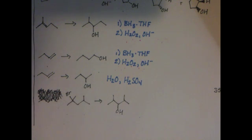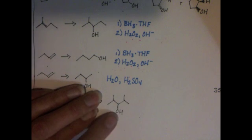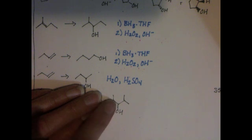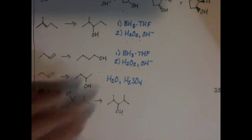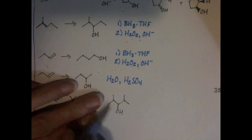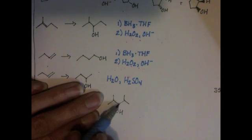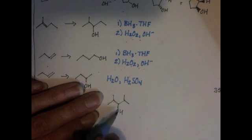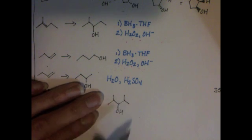So again, we want to retrosynthesize. We want to ask ourselves, do we know how to make an alcohol? Yes, you have now three different strategies of making an alcohol from an alkene. So if we had a carbon-carbon double bond right here or here, which is the same spot because of the symmetry, if we had a double bond right here, we could definitely put on an OH group there.